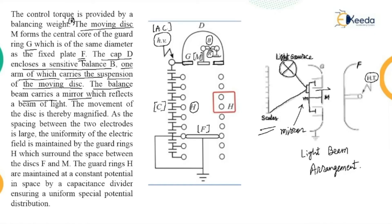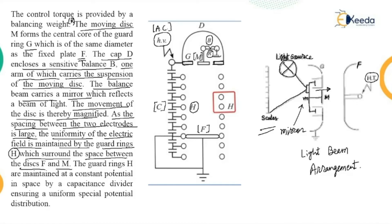The movement of the moving plate M, in terms of small millimeters, moves the mirror in a direction, and accordingly the light beam which falls on that mirror gets reflected and changes its position on the scale — the movement of the disc is thereby magnified. As the spacing between the two electrodes is large, the uniformity of the electric field is maintained by the guard rings, which surround the space between disc F and M. The guard rings are maintained at a constant potential in space by a capacitance divider, ensuring a uniform spatial potential distribution.